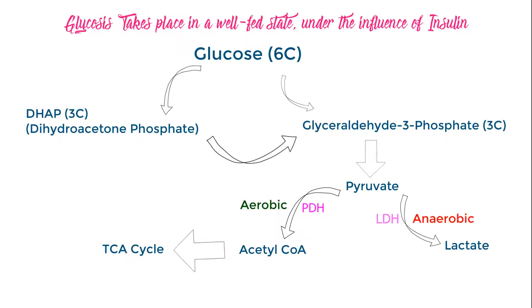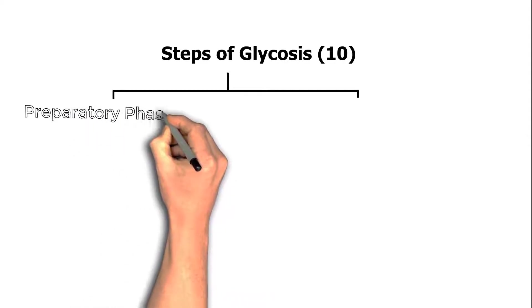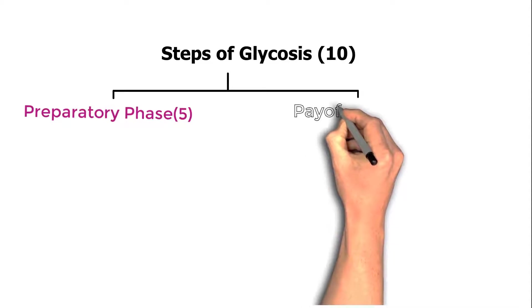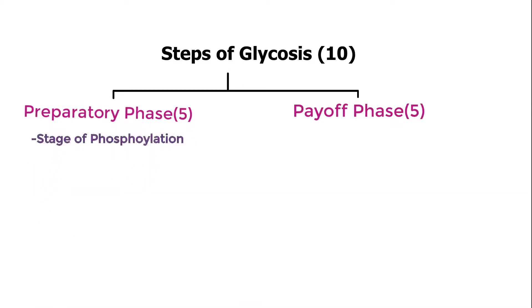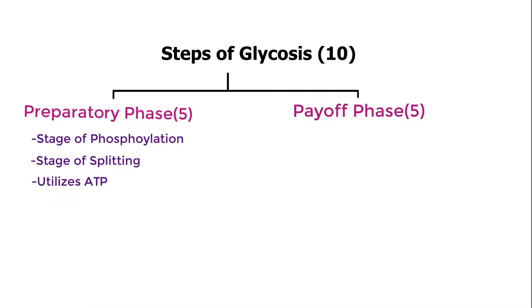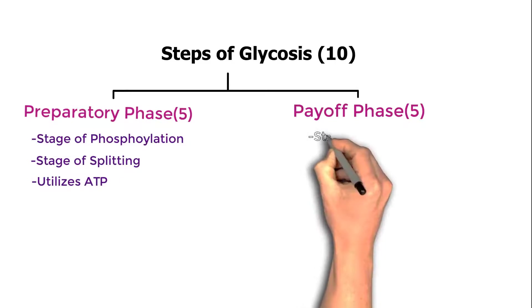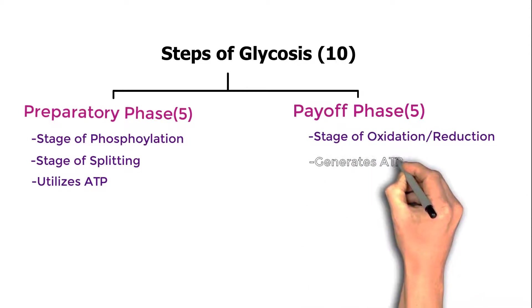The steps of glycolysis are 10 in total, divided into two phases. The first is the preparatory phase — 5 steps — also known as the stage of phosphorylation, splitting, and ATP utilization, where the six-carbon glucose is split into three-carbon compounds DHAP and glyceraldehyde 3-phosphate. The second is the payoff phase — also 5 steps — known as the stage of oxidation and reduction, where NADH is produced and ATP is generated.